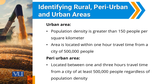According to them, peri-urban areas are those areas that are located between one and three hours travel time from a city of at least a population of 500,000 people. Here they did not consider the population density of people living in that area.